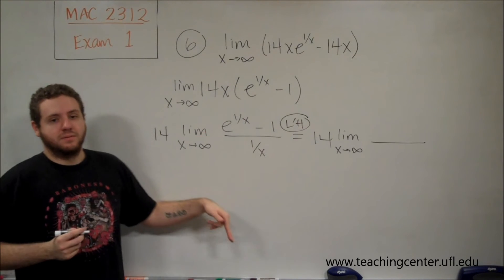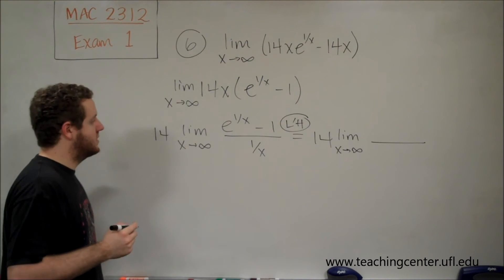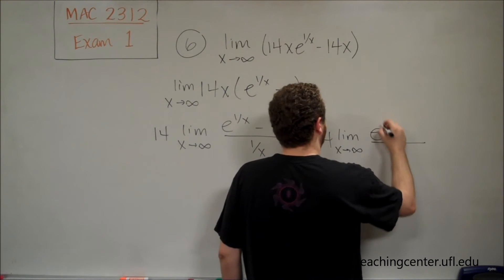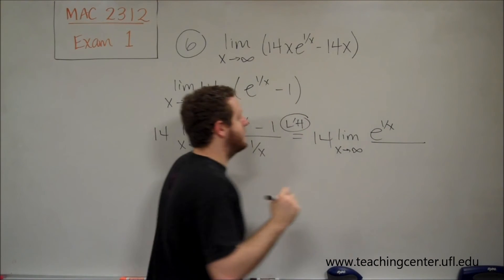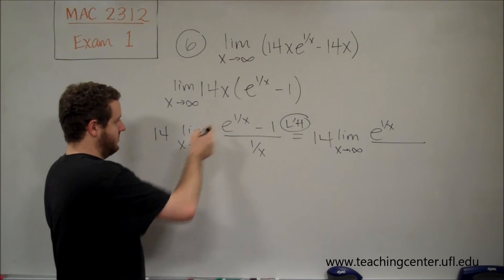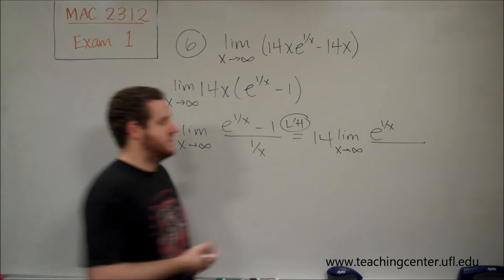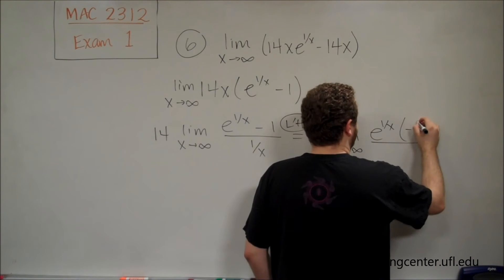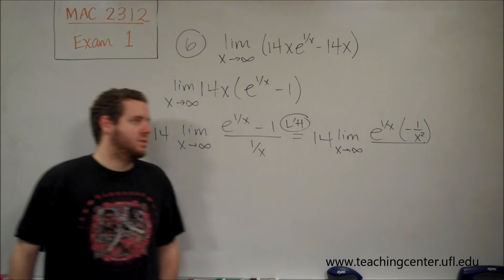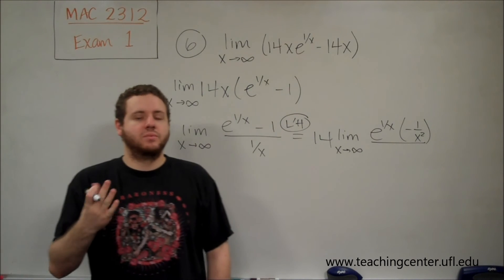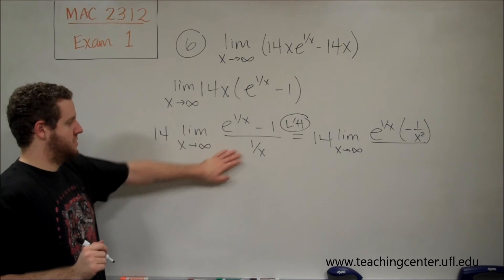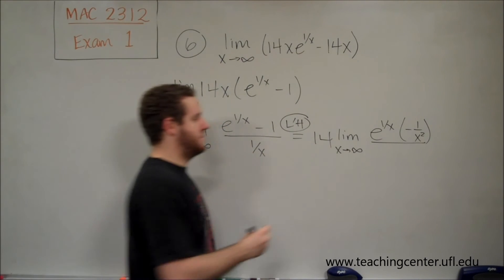The derivative of e^(1/x) is e^(1/x) times the derivative of the exponent. The derivative of 1/x by the basic power rule is -1/x². Remember, you can treat 1/x as x^(-1) and use the power rule. The derivative of the denominator is that exact same thing.